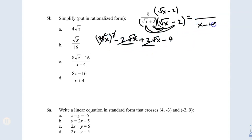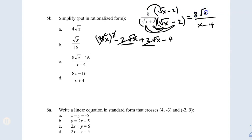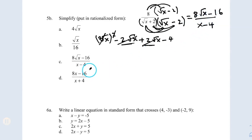Now for the numerator, I need to distribute. The a stays on the outside — it doesn't multiply the x — giving me a times square root of x. Then a times negative 2 gives me negative 2a. I recommend doing all the math on the side and then coming back to the problem. Checking the answers, my answer is C.